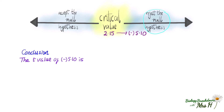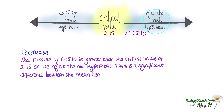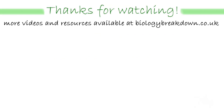The t-value of 5.10 is greater than the critical value of 2.15, so we reject the null hypothesis. There is a significant difference between the mean heart rate during moderate exercise and the mean heart rate during high intensity exercise. And that's it — paired and unpaired student's t-tests done! Head over to biologybreakdown.co.uk for more examples and questions. Thanks for watching — please like and subscribe, and more videos will be added soon.